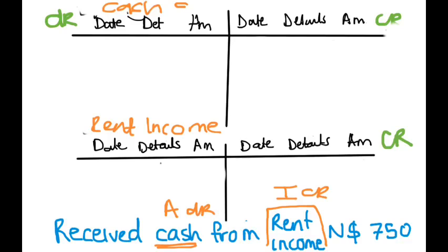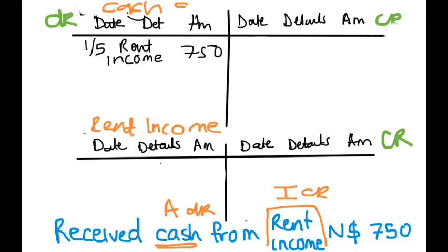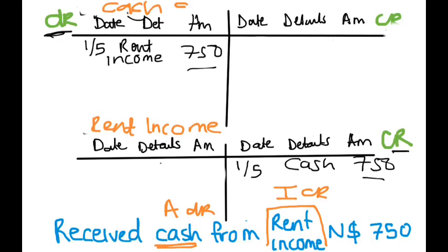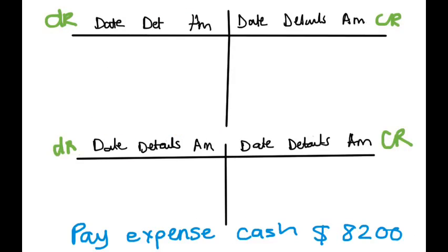Let's say this transaction was made on the 1st of May. In your cash account, we record the date — 1st of May — for rent income, and the amount was $750. Then in your rent income account, on the 1st of May we received cash of $750. So rent income we credited, and cash we debited. Your debits and your credits are equal — we are done with that.